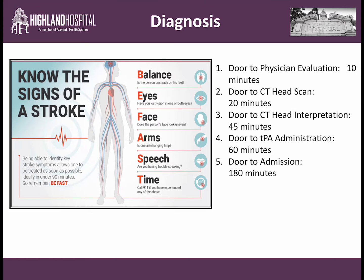The 2018 stroke guidelines outline very specific time requirements for stroke treatment. These include physician evaluation to be done within 10 minutes, a CT head non-contrast to be done within 20 minutes, radiologic interpretation of the CT to be done within 45 minutes, thrombolytic administration to be done within 60 minutes, and ER inpatient admission to be done within 180 minutes. This may appear tight, but the fastest time clocked within Alameda Health System from door to TPA administration was 26 minutes — not bad.